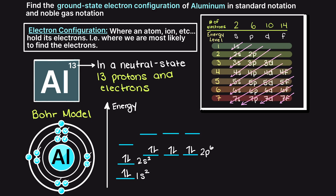Continuing down our diagram from above, we can see that we have 3s and then 3p. Filling the s orbital with 2 electrons, we are left with a single remaining electron. This electron can be placed into any of the 3 orientations of the 3p subshells. All three positions are equivalent energy states and therefore it doesn't matter which one gets the electron.